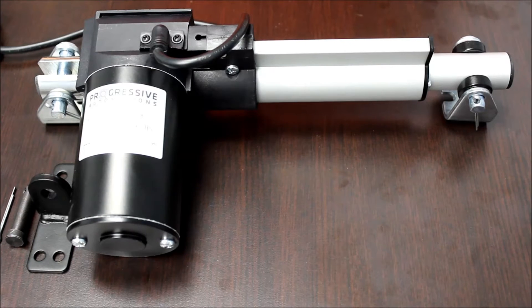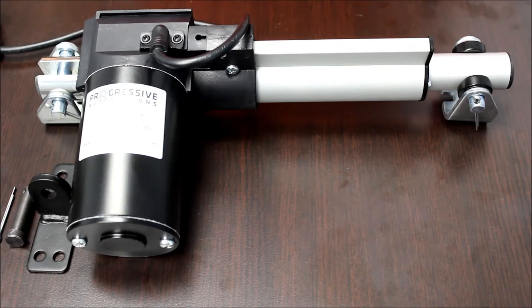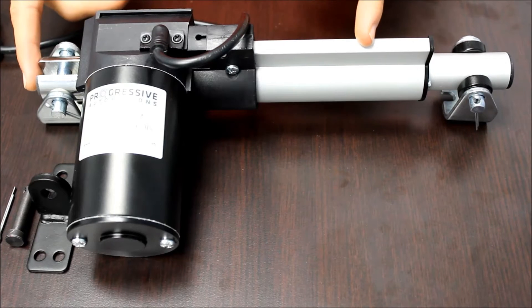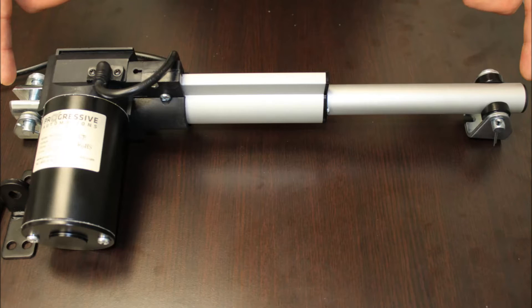We are using a PAO3-4-200 for today's demo. The PAO3 has a retracted length of 6.79 inches plus the stroke and an extended length of 6.79 inches plus 2 times the stroke.